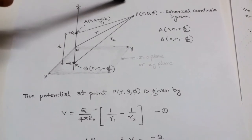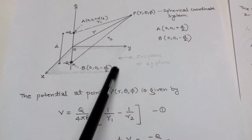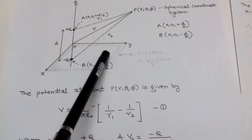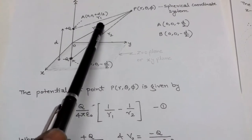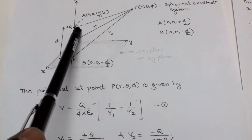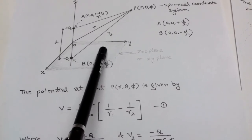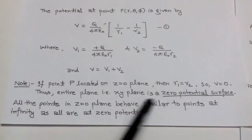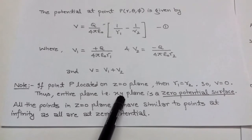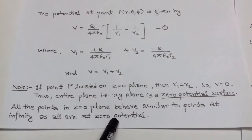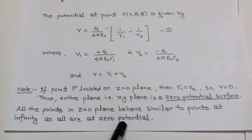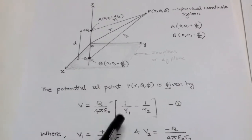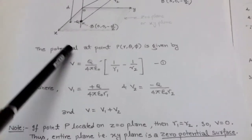We assume that point P is on the xy-plane, that is the z = 0 plane. On this plane, r₁ and r₂ are equal, so after substituting into equation 1 we get potential equal to 0. This means the entire z = 0 plane behaves similar to points at infinity, as all points are at zero potential, just as the potential at infinity is zero.